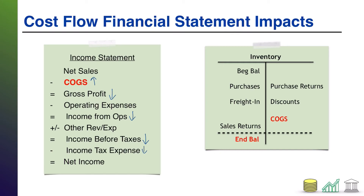However, because taxes are only a proportion of income before taxes, your net income will also be lower. On the other hand, if the cost flow method you're using results in a lower cost of goods sold — for example, using FIFO (first in, first out) in an inflationary period, which typically has lower relative cost of goods sold — then gross profit will be higher, income from operations will be higher, income before taxes will be higher, and of course you'll pay more in taxes. But ultimately, net income will be higher.